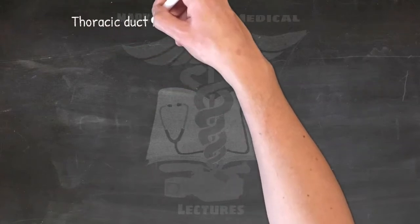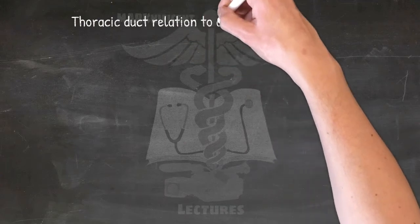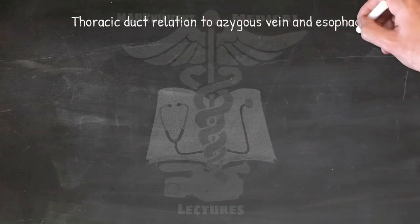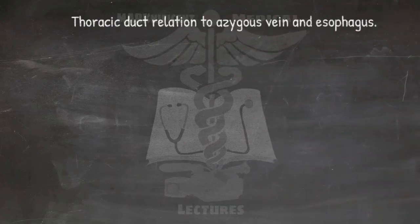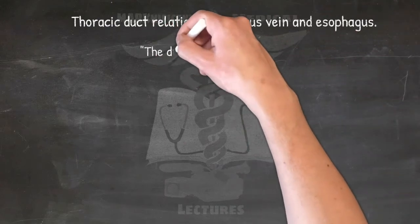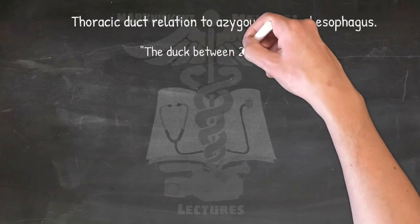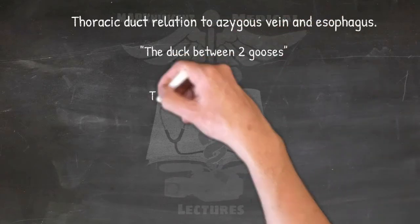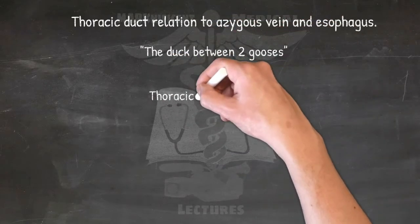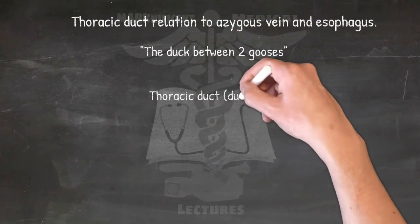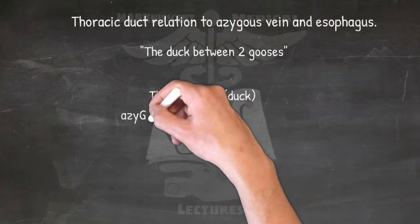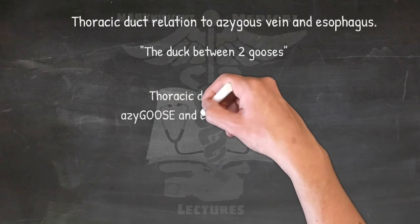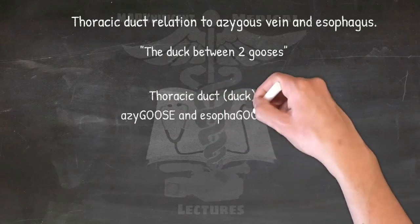For the thoracic duct's relation to the azygos vein and esophagus, remember: 'The duct between two gooses.' The thoracic duct is between two 'gooses' — azygos and esophagus.